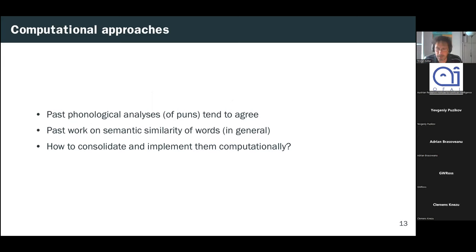So wrapping up the background section, as we've seen here, there's no great shortage of past work on modeling the sound similarity of arbitrary pairs of works or on puns in particular. And by and large, the analyses that have been done on plans tend to agree with one another. There's also a great deal of past work on measuring the semantic similarity between words. So the long term challenge for computational humorists, then, is to have to consolidate all this research into a single model that can be implemented computationally.